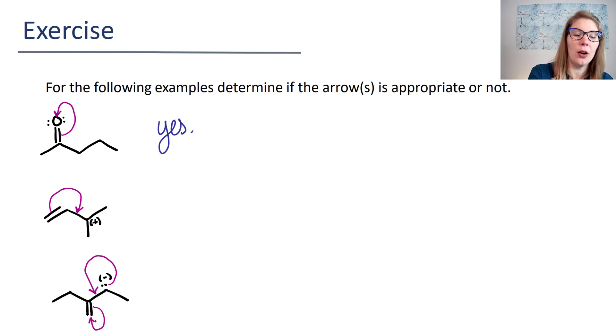The next one is also a yes. The reason that this one is a yes is because there is a positive charge on that carbon. If there wasn't positive charge on the carbon, then we would not be able to have that arrow because we would be breaking an octet.